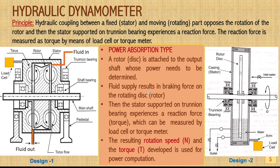Another kind is the hydraulic dynamometer. The principle involves hydraulic coupling between a fixed member called the stator and a moving element called the disc or rotor. The coupling between stator and rotor opposes the rotation of the rotor. The rotor, supported on a trunnion bearing, experiences a reaction force, which is measured as torque by means of a load cell or torque meter. Two designs are shown in this slide.